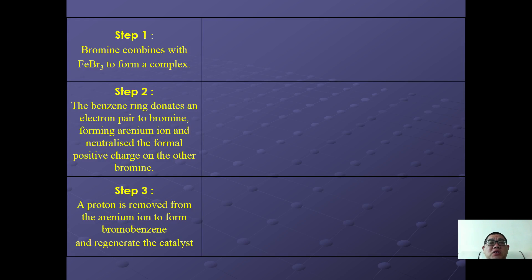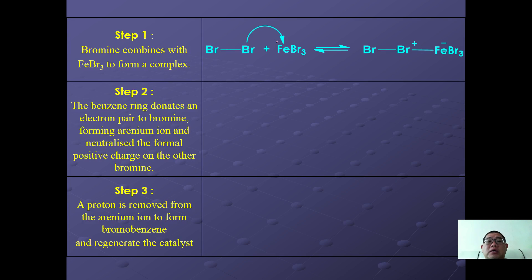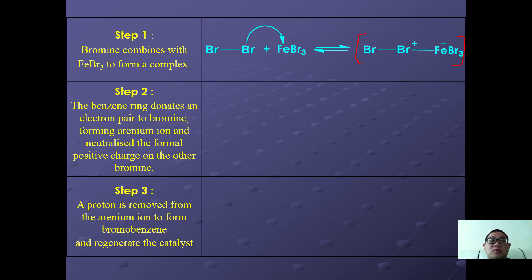In the first step, the FeBr3 complex is formed with bromine. The bromine molecule attacks the FeBr3 to form a complex Br2·FeBr3. This complex will then act as a good electrophile to attack the benzene ring in step two.